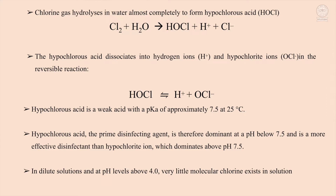The hypochlorous acid dissociates into hydrogen ion (H⁺) and hypochlorite ion (OCl⁻) in a reversible reaction. Hypochlorous acid is a weak acid with a pKa of approximately 7.5 at 25°C. It is the prime disinfecting agent and is dominant at pH below 7.5, making it a more effective disinfectant than hypochlorite ion, which dominates above pH 7.5. In dilute solutions at pH levels above 4.0, very little molecular chlorine exists in solution.